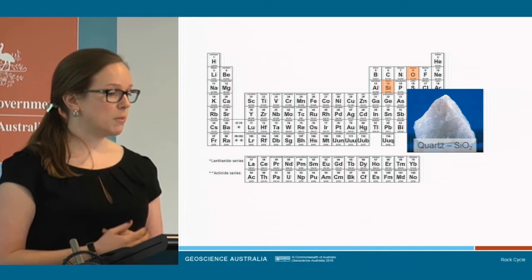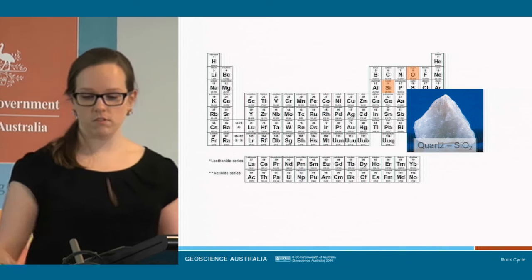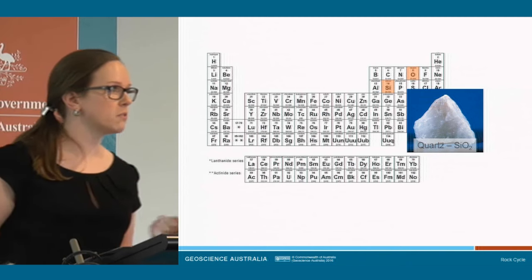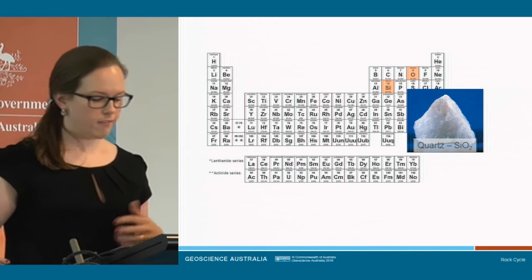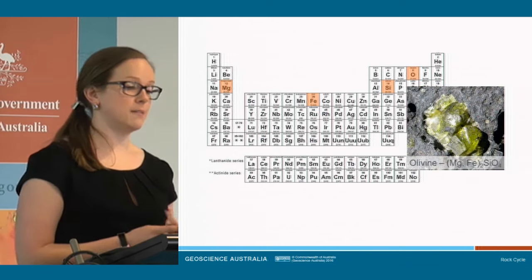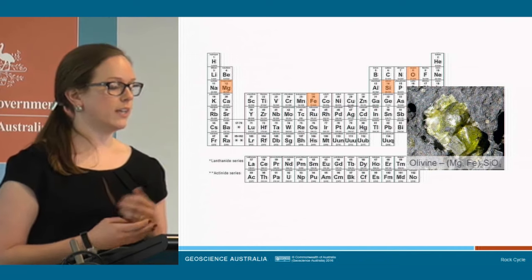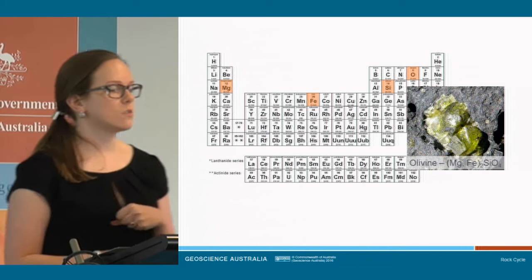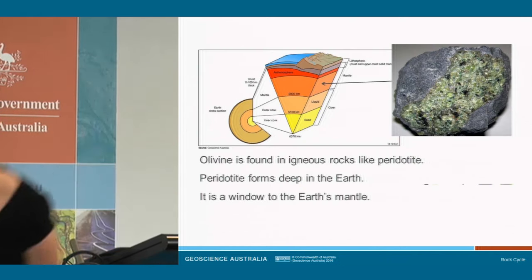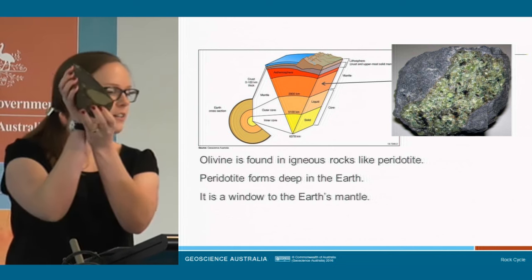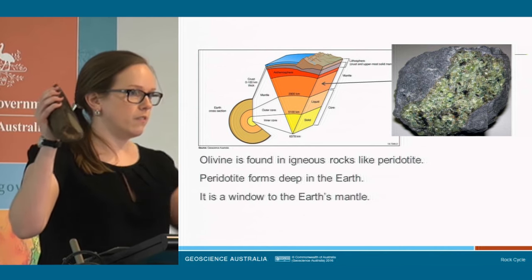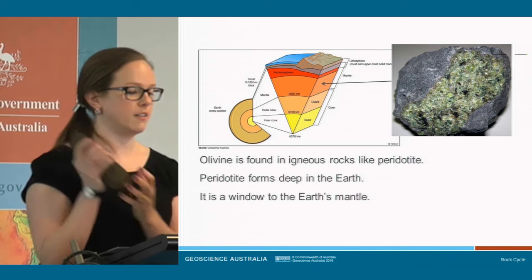A really basic, really common mineral is quartz — silicon and oxygen arranging themselves into a rigid lattice to form quartz, one of the most common minerals in the earth's crust. But if we add a few extra elements like magnesium and iron, we can get olivine. Olivine is one of the main ingredients in an intrusive igneous rock called peridotite. Peridotite is the main constituent of the earth's mantle, forming hundreds of kilometers beneath the earth's surface.